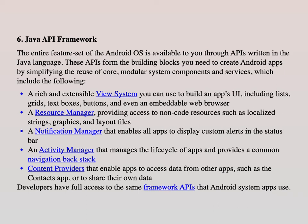For example, when using Amazon Pay to top up a mobile number, the contact information is accessible within that process via a widget for accessing contacts. This intercommunication between two different applications — Amazon Pay and the contacts app — is enabled by content providers. Developers have full access to the same framework APIs that Android system apps use.